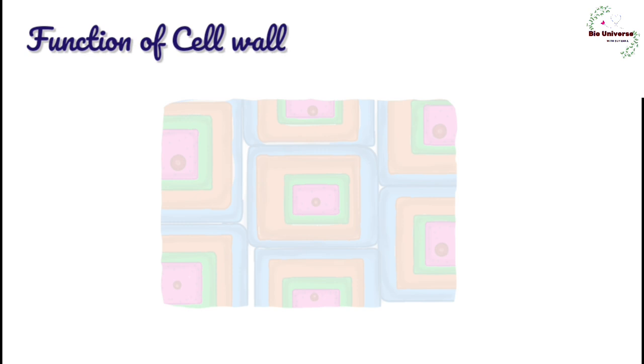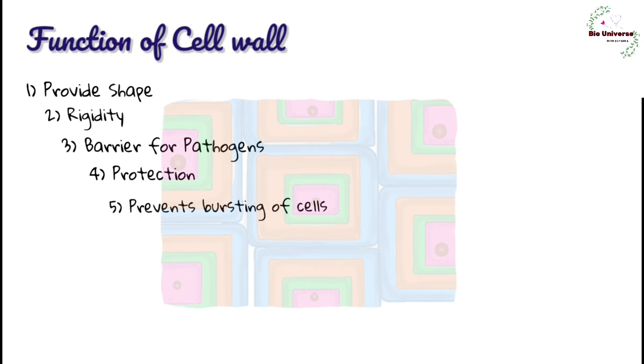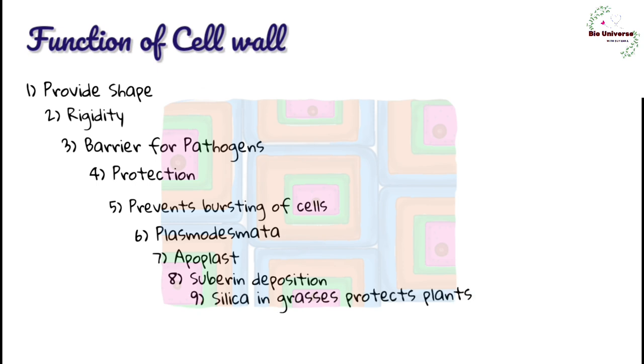Function of cell wall: 1. Cell wall provides shape to plant cells. 2. It imparts rigidity to cells. 3. It functions as a barrier to the entry of pathogens into the cells. 4. It provides protection to protoplasm against mechanical injury. 5. It prevents bursting of cells on endosmosis. 6. Plasmodesmata between the adjacent cells produce a protoplasmic continuum called symplast. 7. It functions as apoplast which is permeable to water and minerals dissolved in it. 8. Suberin deposition in plant cell makes root endodermis a biological check post. 9. Silica deposition on surface walls of grasses protects plants from fungal attack. 10. Cutin, wax and suberin protect plants from excessive transpiration or loss of water in vapour form.